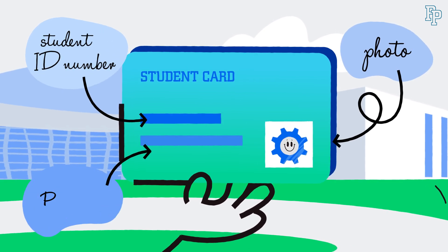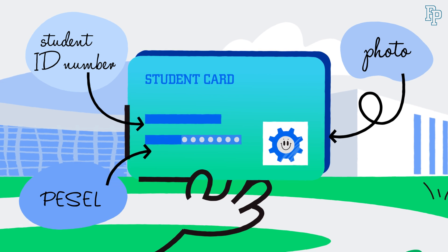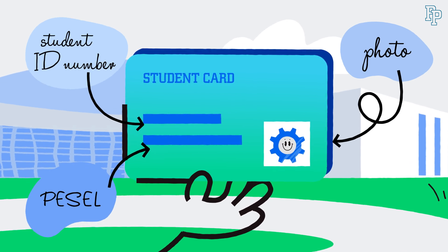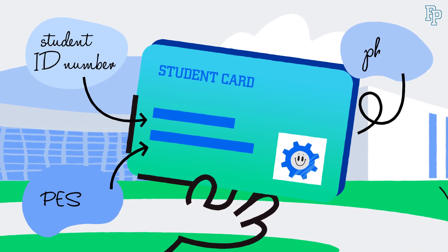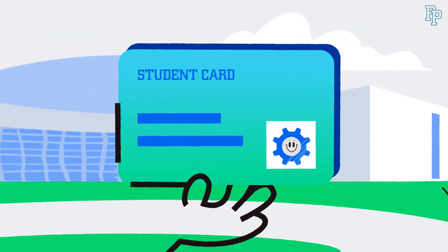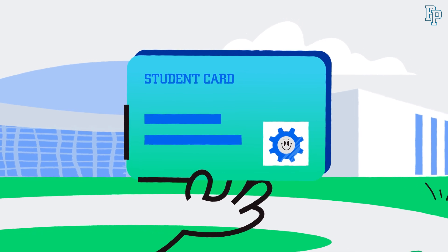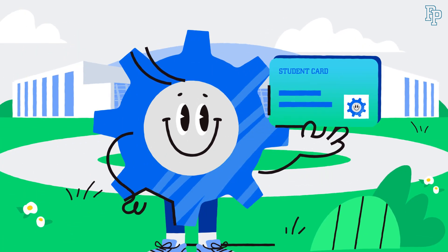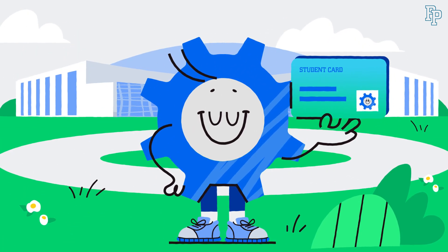It also includes your PESL number. If you haven't received a PESL number from authorities, the university will assign you an artificial one. When you get your PESL number, remember to notify the dean's office and update your documents.